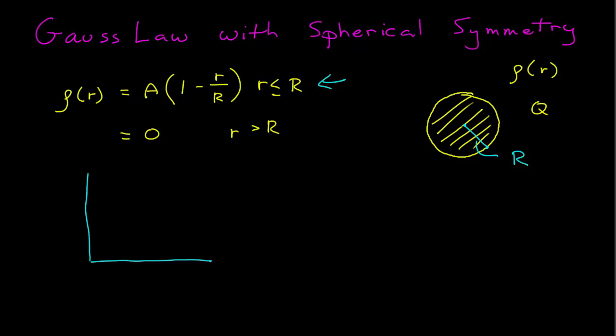So it's saying that at the origin, at r = 0, this ρ(r) is equal to some value A. So that A is the density, the charge density at the center.